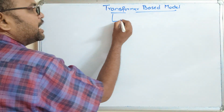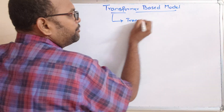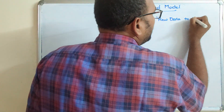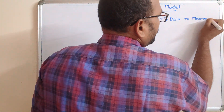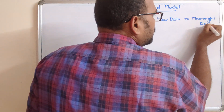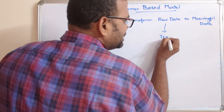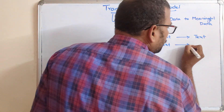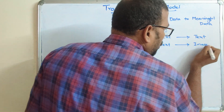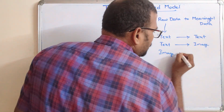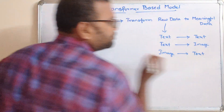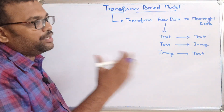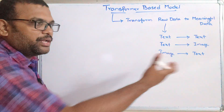The name itself indicates what it does — transformer means it will transform raw data into meaningful data. This raw data can be text, and the meaningful output can also be text, or text can convert to image, or image can convert to text. So transformers can be applied on different types of data: text to text, text to image, or image to text.